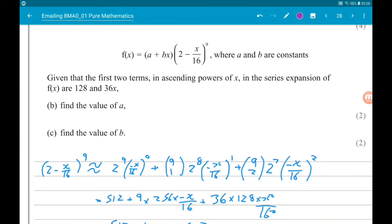Okay, next up, we are given that f of x is a and bx times 2 minus x over 16, all to the power of 9, where a and b are constants. So, given that the first two terms in ascending powers of x of the series expansion of f of x are 128 and 36x, part b wants us to find the value of a.